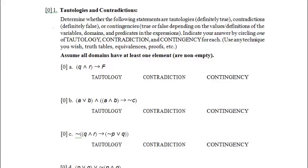Indicate your answer by circling one of: tautology (definitely true), contradiction (definitely false), or contingency (could be either one). We can use any technique we want, like truth tables, equivalences, or proofs.